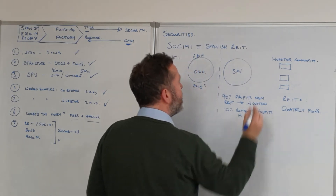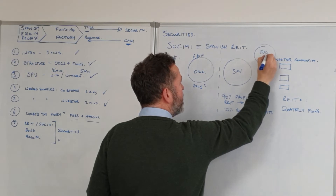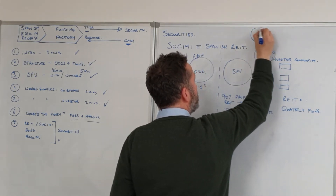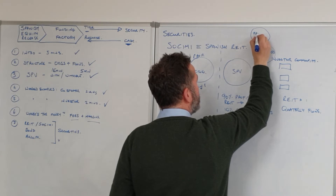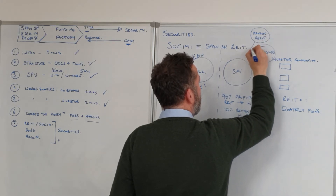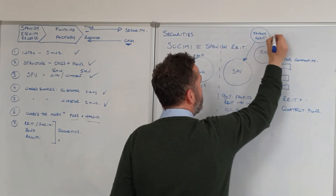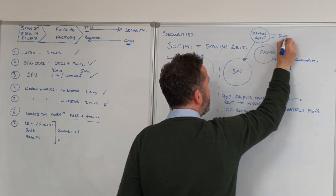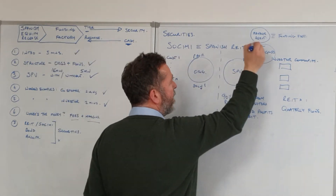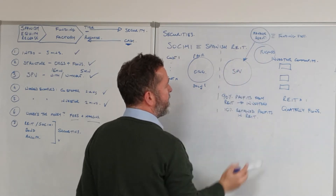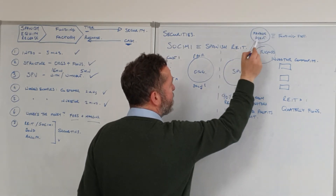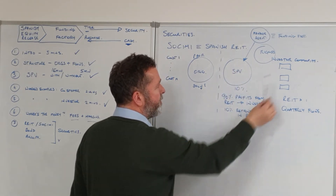There is an entity that holds the bare ownership rights, which may be separated from the REIT. There is also a management agent or organisation — which could be, for example, Funding Factory — that can charge management fees. So not only does the 10% reside there, but the management agent can also charge fees to the SPV for administering this whole process.